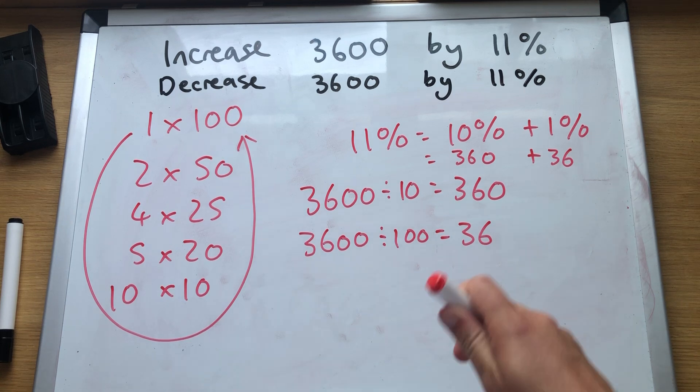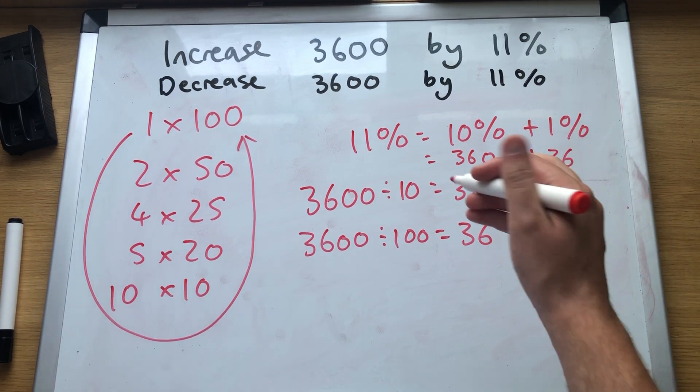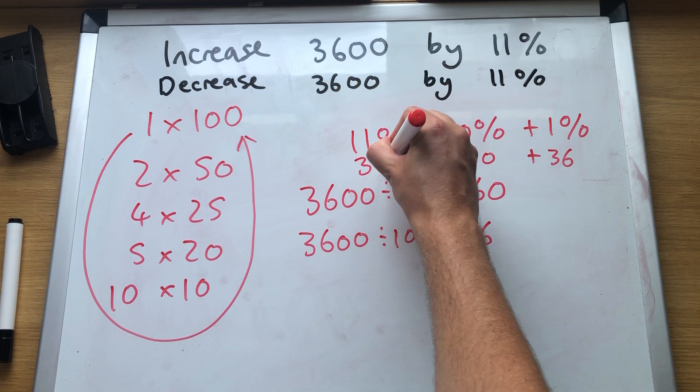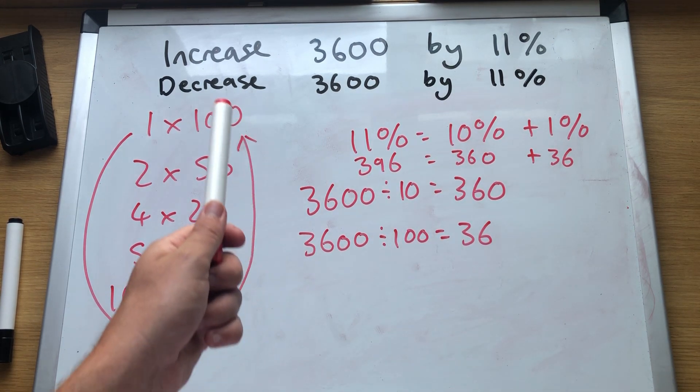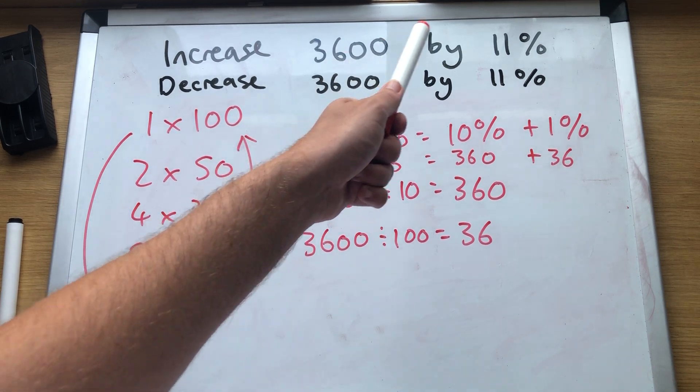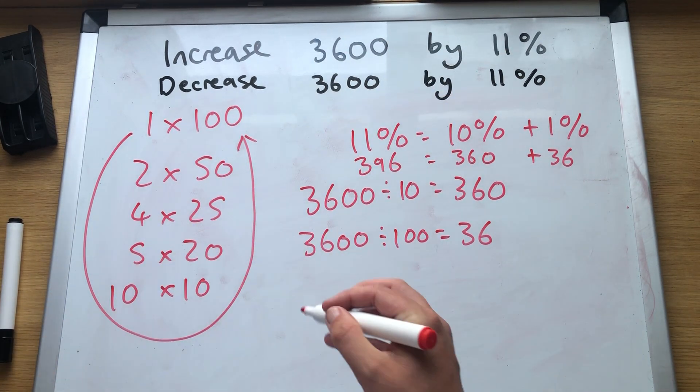So to work out 11%, 360 plus 36, 36, 396. So if we are increasing is 3600 plus 396.